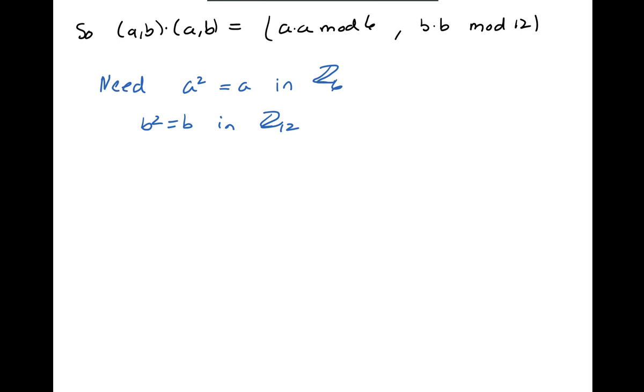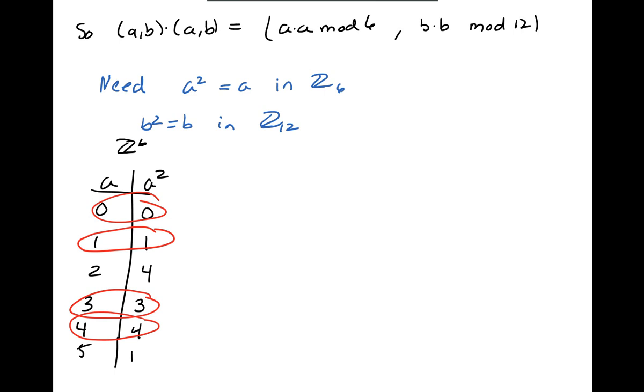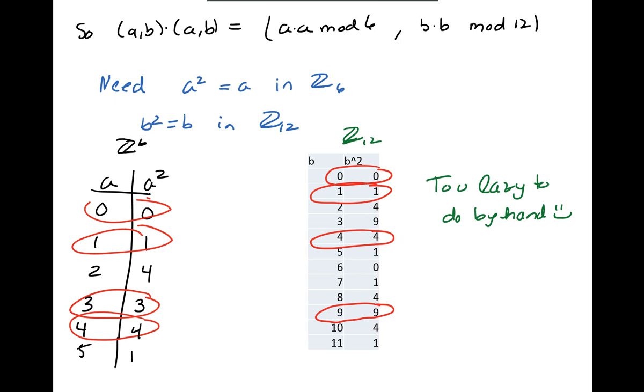So that tells me that I need to look at the idempotent elements in Z6 separately from the idempotent elements in Z12. So here's Z6 drawn out. I just squared all the elements and I looked at which ones gave me the same thing back in a table form.